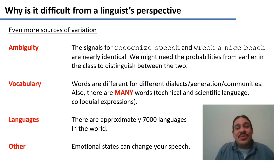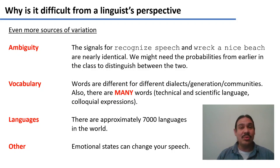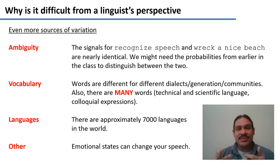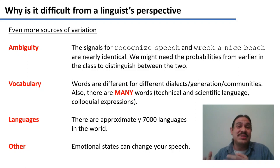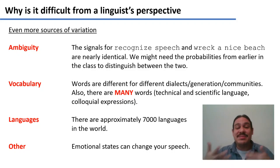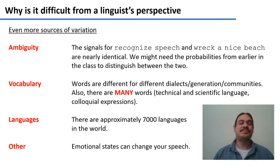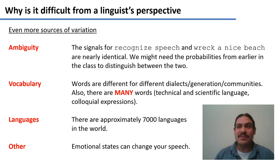Vocabulary presents further challenges. There are tens of thousands of words, and not all are used with the same frequency — common words like 'is' and 'are' appear constantly, while technical or scientific words are rarely represented in training data. Different regional dialects, generations, and communities use different words, and new colloquial words may not appear in a dataset trained on newscasts from the past ten years. Beyond vocabulary, there are about 7,000 languages in the world, and NLP exists for only about 100 of them.